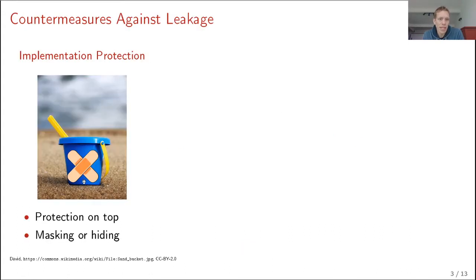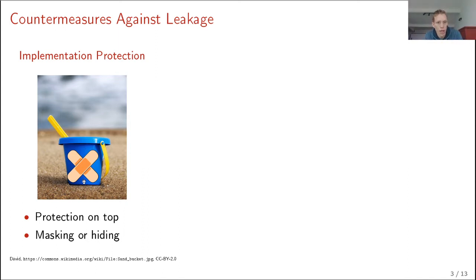One way of protection is implementation protection. The idea is that you take a very simple, lightweight scheme but you put protection on top — for instance, masking or hiding. While the scheme is very efficient, this makes the countermeasure typically design-specific and sometimes rather expensive.